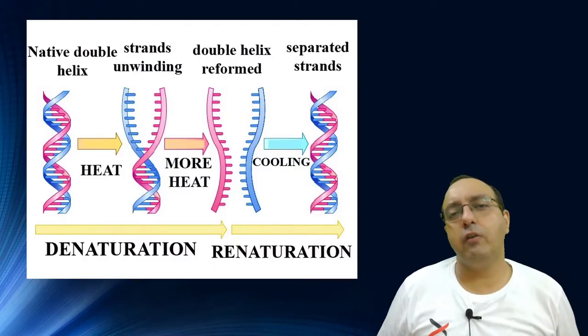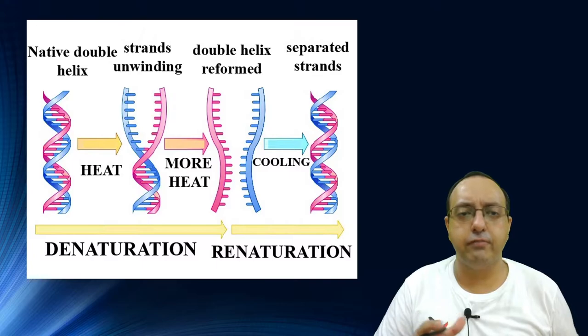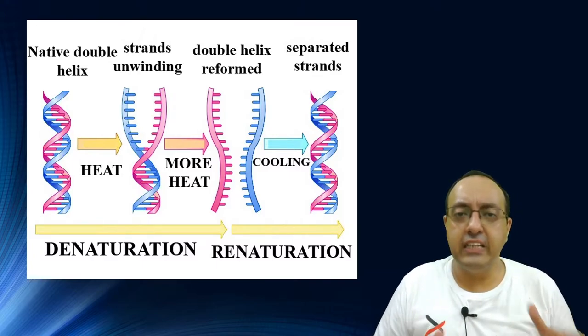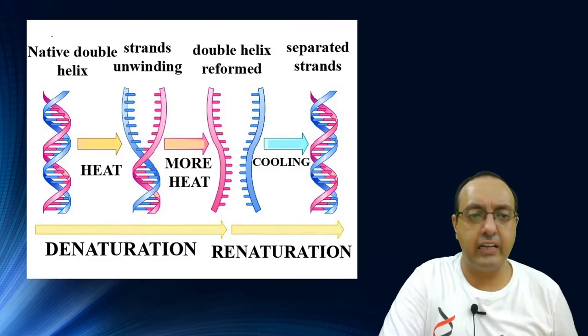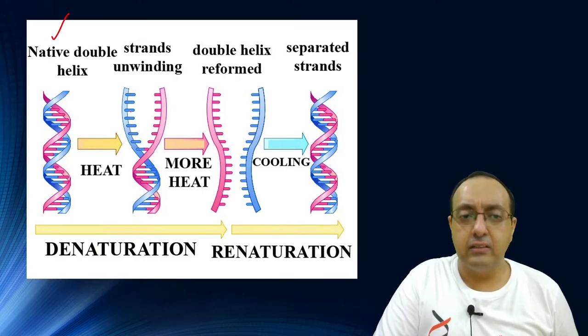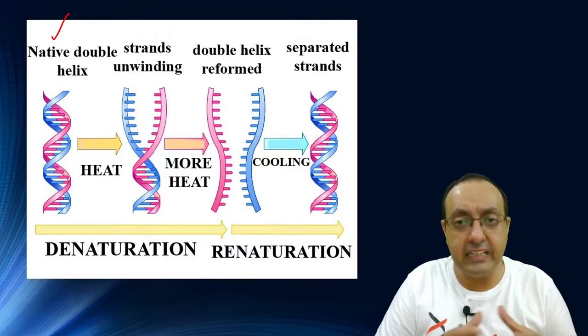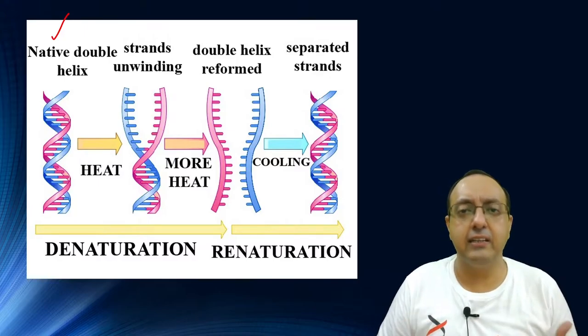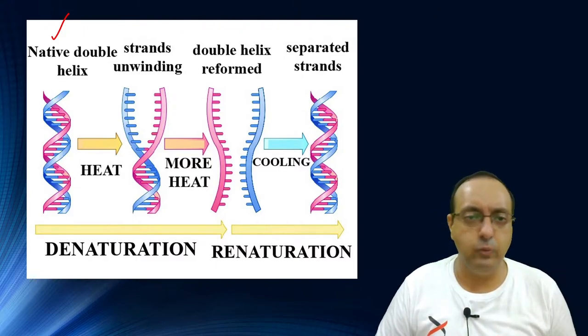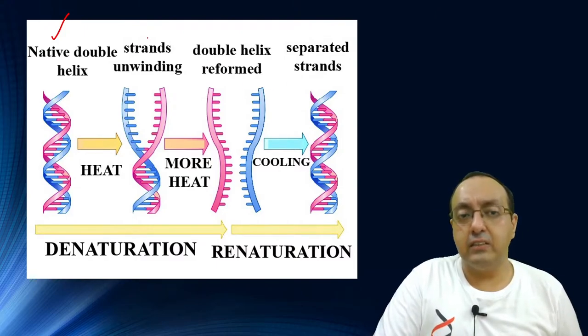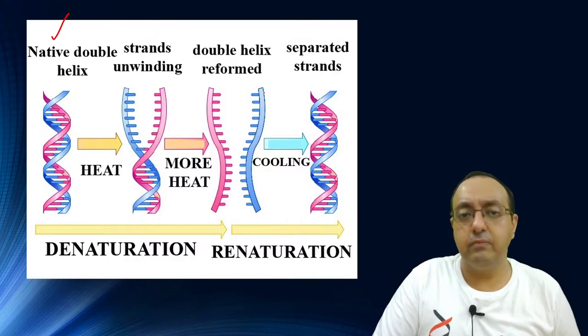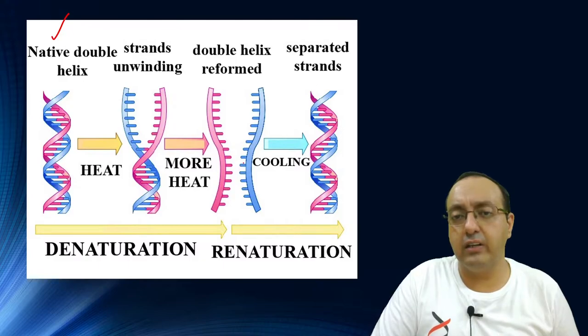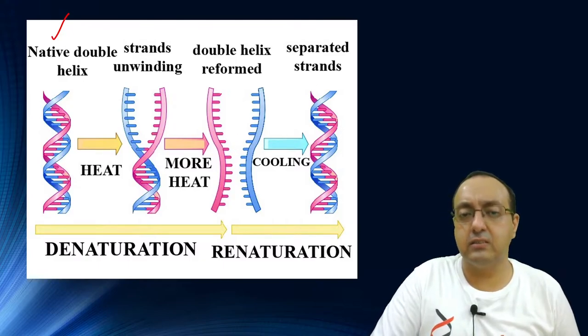Now the phenomenon of Cot Curve Analysis relies on this fact: when we denature DNA, it goes from the double-stranded DNA form, which is the native double helix, to unwinding. If we keep heating the DNA—heating is the preferred method for denaturing DNA, although you can use chemicals also—eventually the single-stranded DNA helix is formed.